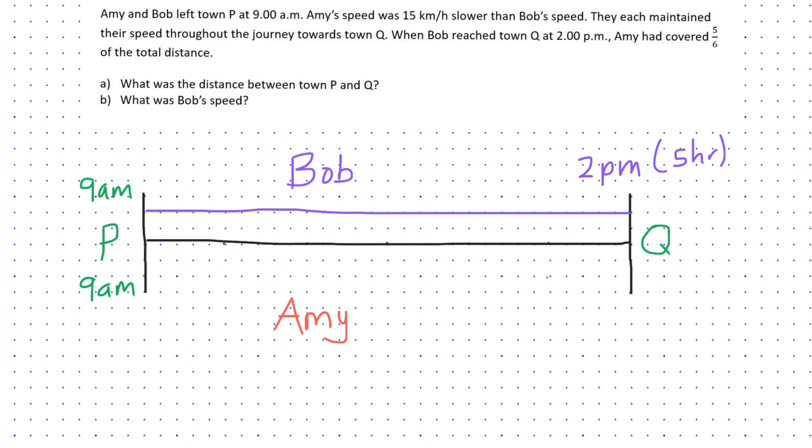So let's move on to Amy. It says when Bob reached town Q at 2pm, Amy had covered 5 out of 6 of the total distance. So I will now divide this line into 6 equal parts. So when Bob reached town Q at 2pm, Amy had covered only this portion of the distance, which is 5 over 6. Which means that Bob had covered 6 out of 6 of the total distance. So at 2pm, Bob is in town Q, whereas Amy is here. So the distance between Bob and Amy is 1 sixth of the total distance.